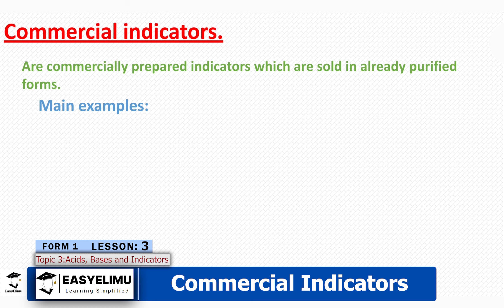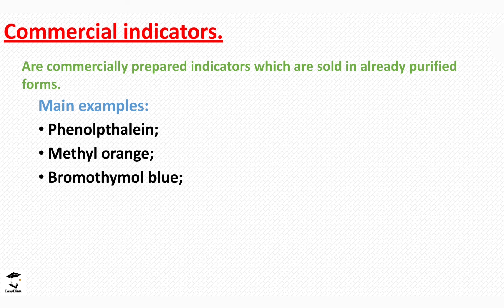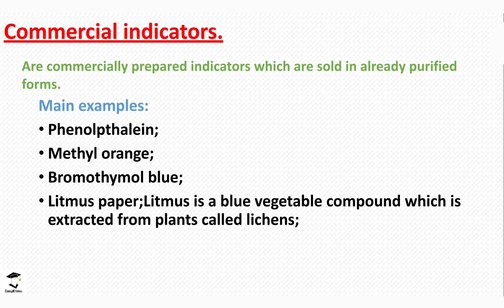These are more reliable. Examples are phenolphthalein, methyl orange, bromothymol blue, and litmus paper. Litmus paper comes in both paper and solution forms—we have red and blue litmus paper, and litmus solution. Litmus is extracted from plants called lichens.